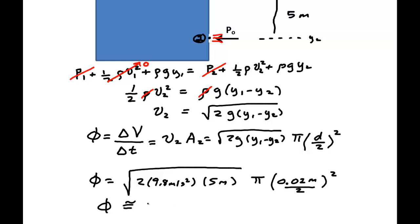And let's see what we get for a flux. So take my calculator. And I have the square root of 2 times 9.8 times 5. And we multiply that by pi. Multiply that by .01 squared.